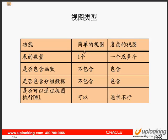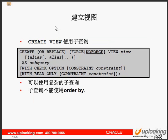视图类型有简单的视图和复杂的视图。简单的视图通常只涉及一个表，多个表一般叫复杂的视图；不包含函数就是简单的，包含了函数就是复杂的；不包含分组数据语句就是简单的，包含了就是复杂的。创建视图的语句是：CREATE OR REPLACE FORCE VIEW 视图名字 AS 子查询，后面还可以加上 WITH CHECK OPTION 或 WITH READ ONLY 等参数。